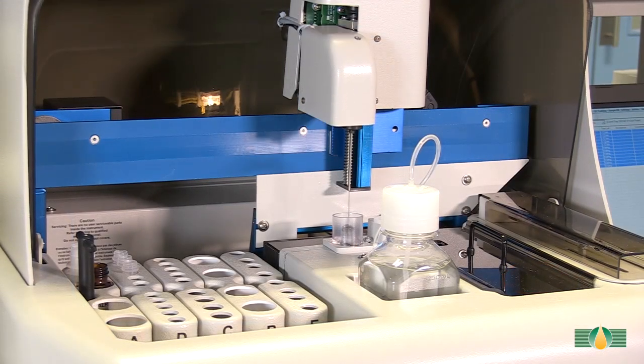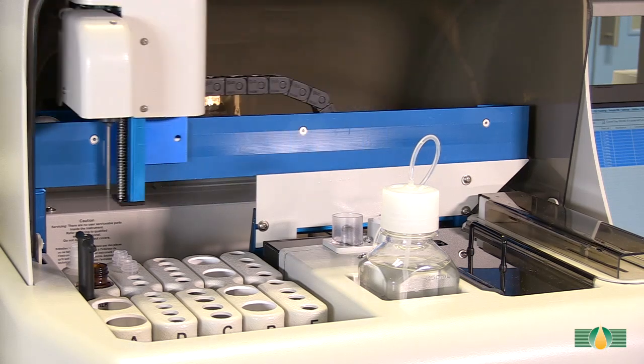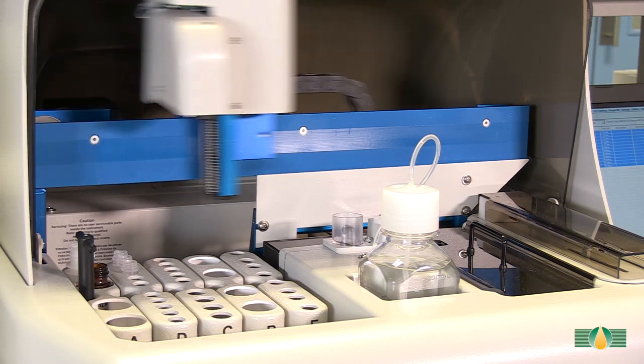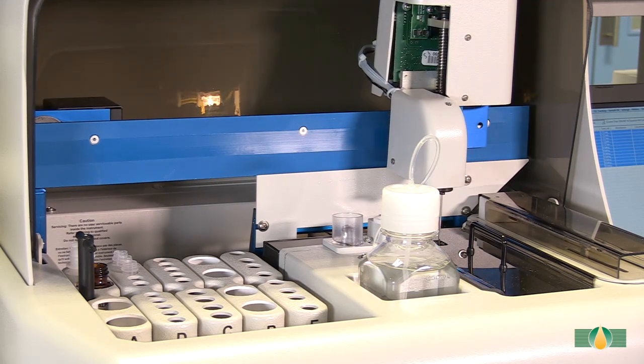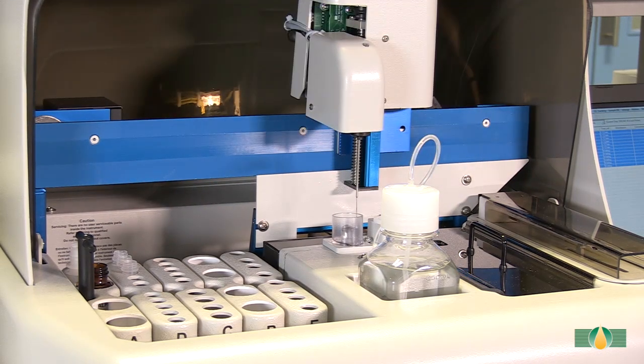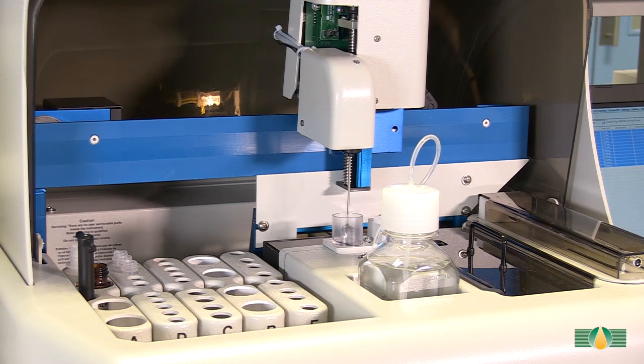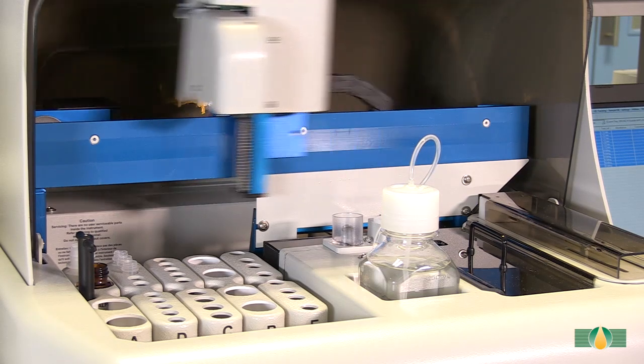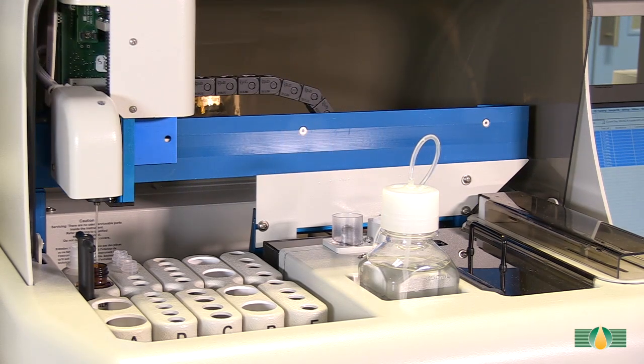In this automated alpha-amylase assay procedure, 20 microliters of malt extract sample is added to 20 microliters of Ceralpha reagent, then mixed, followed by incubation for 10 minutes. Reactions are terminated by the addition of 300 microliters of stopping reagent, and the absorbance is read at 405 nanometers.